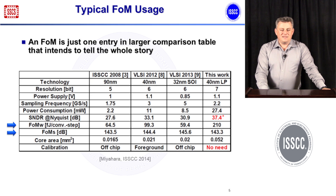In practice, if you report your results at ISSCC or another conference, it is not sufficient to just list the figure of merit. You need to generate a table that lists many other performance aspects that are important about your design, and here I'm showing a very good example that does this in the right way.